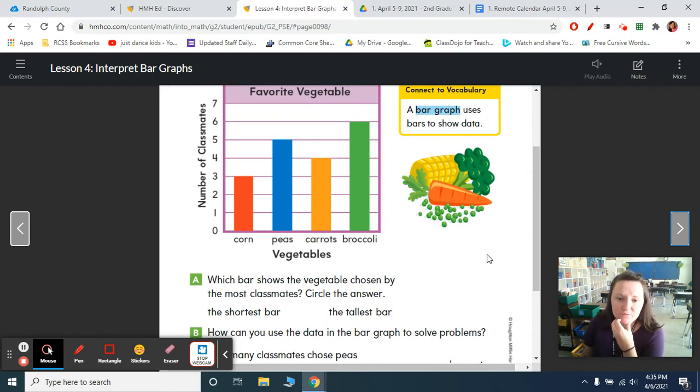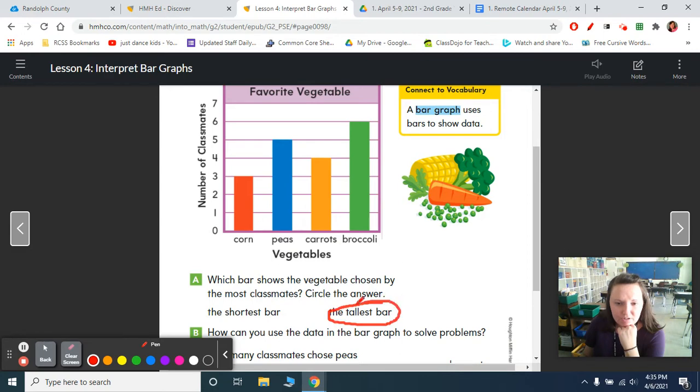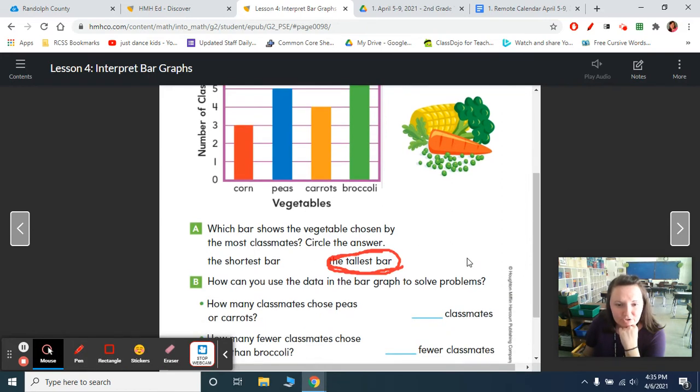So which bar shows the vegetable chosen by the most classmates? We have corn, peas, carrots, and broccoli. Which bar shows the vegetable chosen by the most classmates? So the number of classmates is right here. So if we go up, it should be the tallest bars. You're going to circle the words the tallest bar. Then it says, how can you use the data in the bar graph to solve problems? How many classmates chose peas or carrots? Remember, or means you've got to add it together this time. So peas, we had five. It lines up with five. And then we had four carrots. So five plus four is nine. So go ahead and write that down.